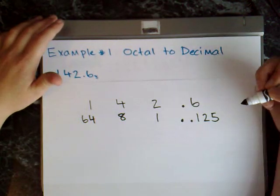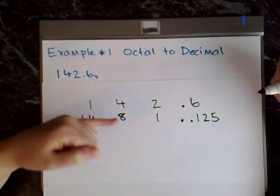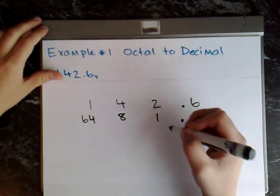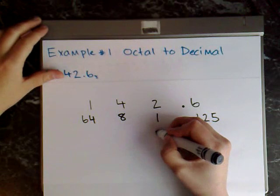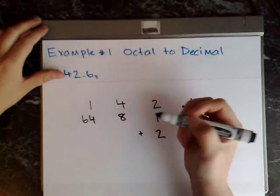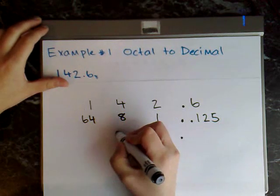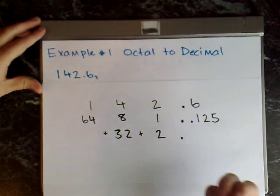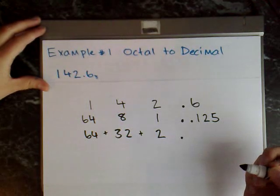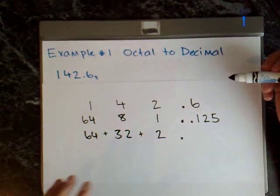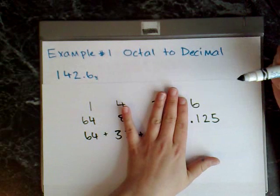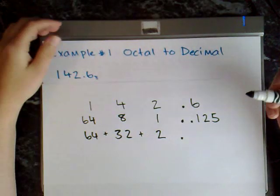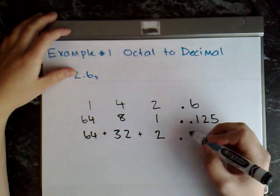And the next step now is to multiply each number together. So I have 1 times 2, that equals 2. Then I go plus 4 times 8, that's 32. Plus 1 times 64, that equals 64. And then what I do here is I just cover up that first row of decimal places. And that gives me 6 times 0.125, and that equals 0.75.